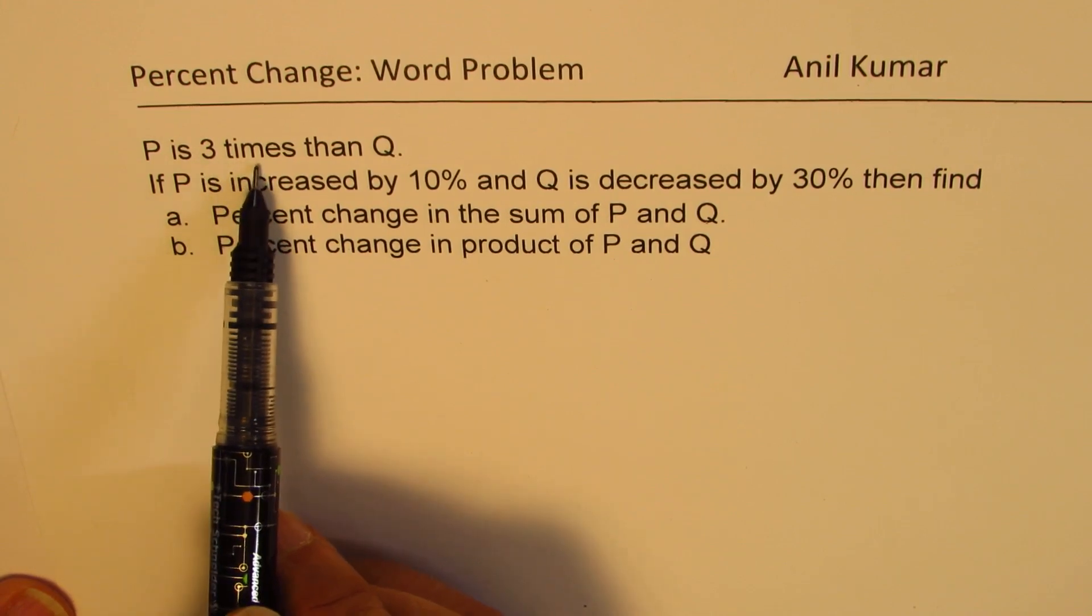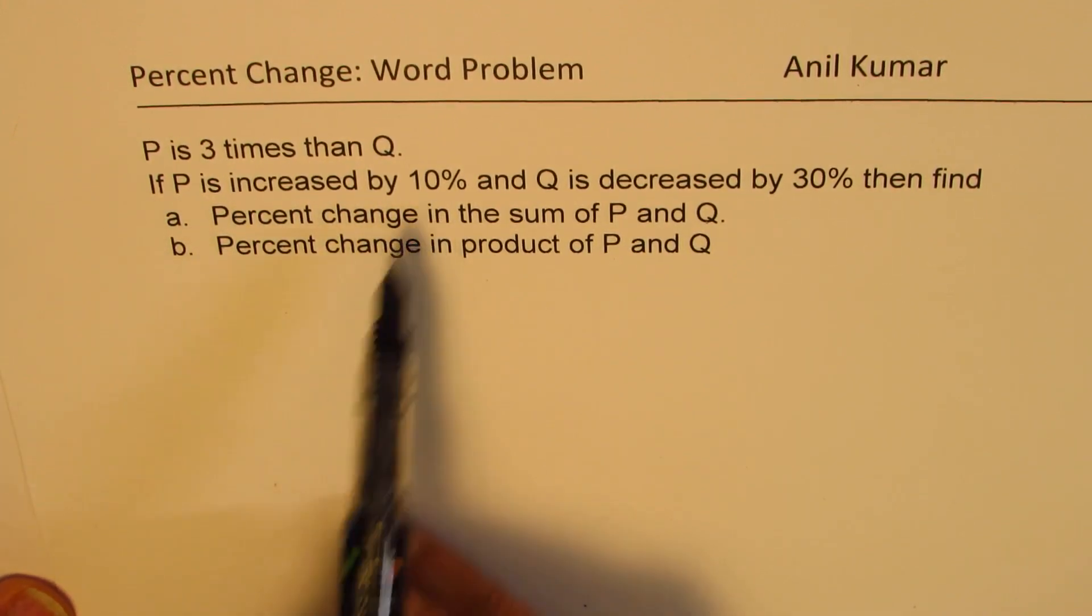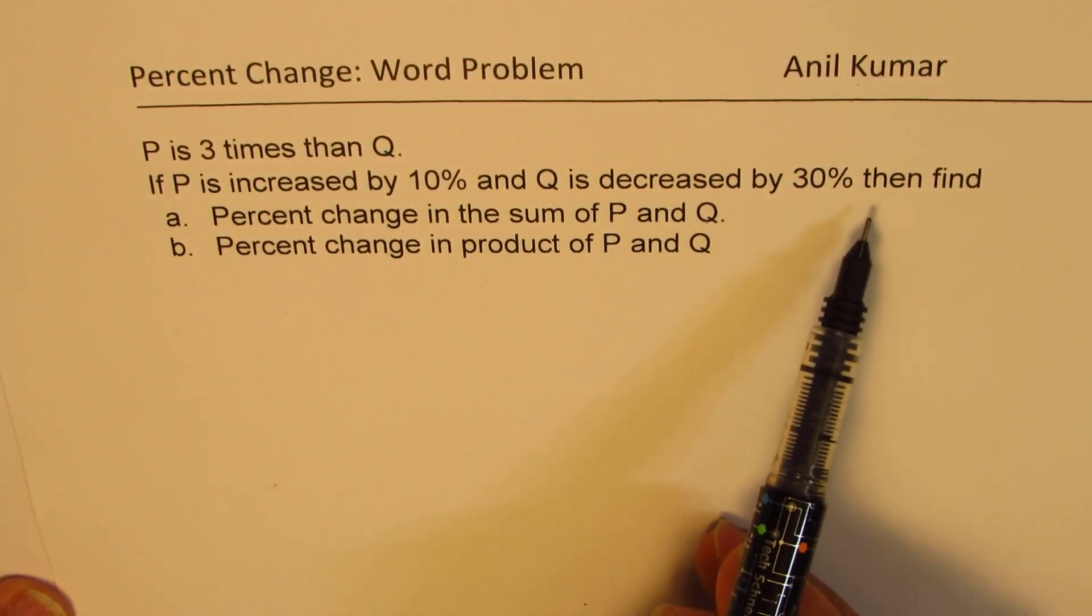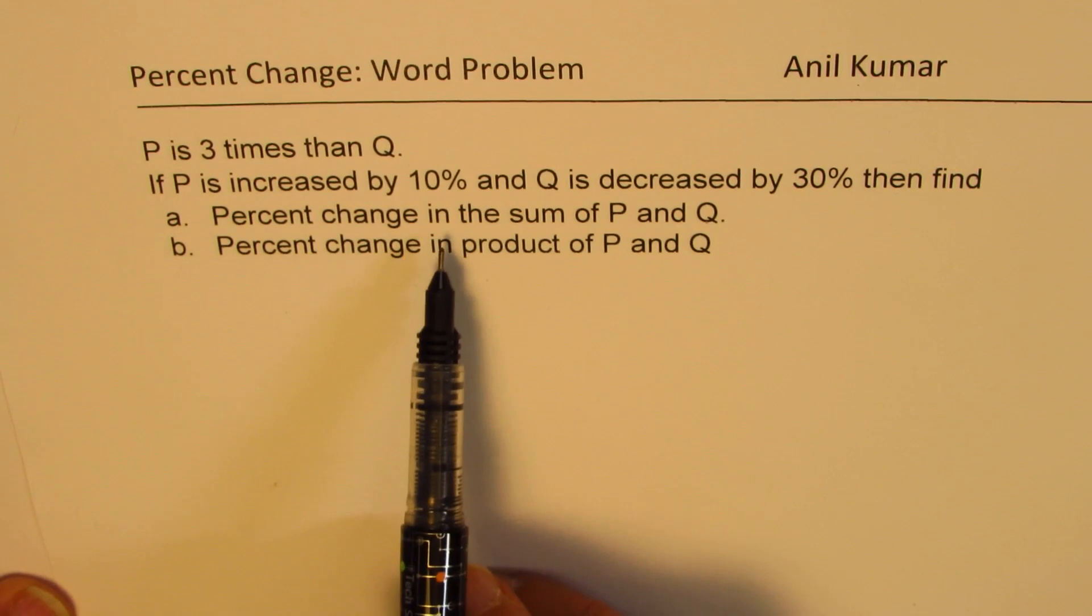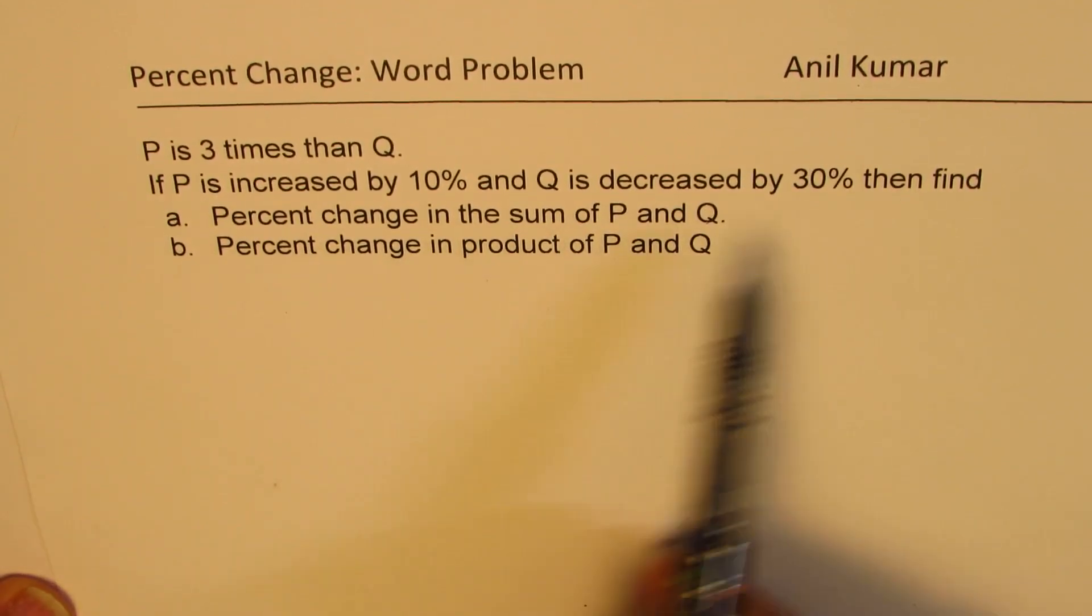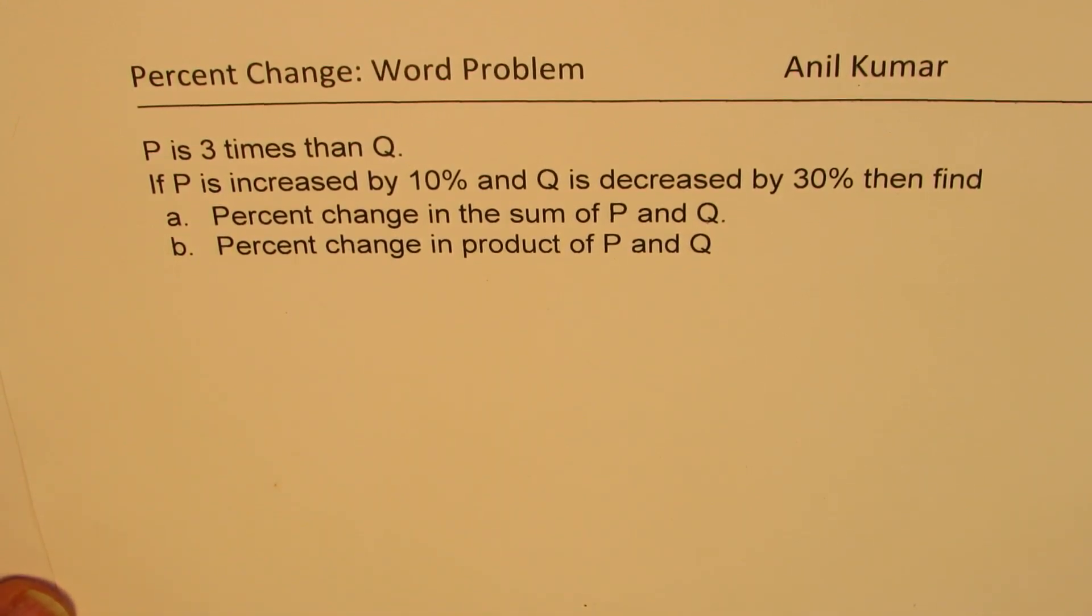Let's look into the question. P is three times than Q. If P is increased by 10% and Q is decreased by 30%, then find percent change in the sum of P and Q and find percent change in product of P and Q. You can always pause the video, answer the question, and then look into my suggestions.